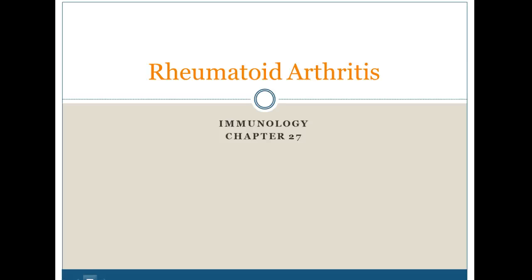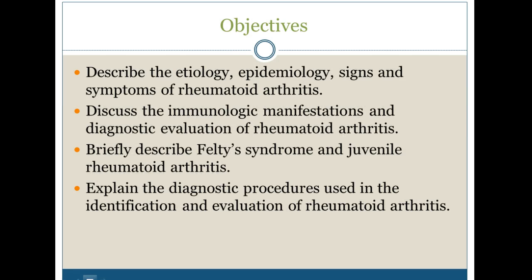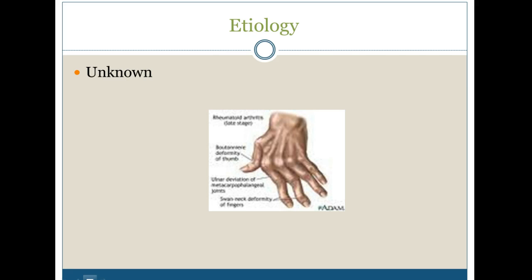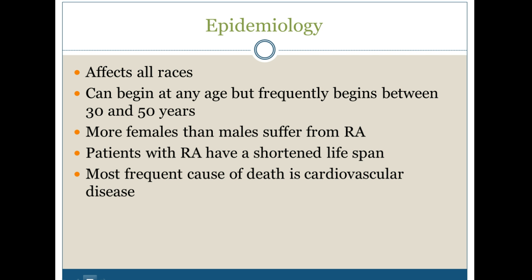Welcome to the section on rheumatoid arthritis. When we talk about the etiology of rheumatoid arthritis, it is unknown, or what we've been referring to in the last couple chapters as idiopathic — we have no idea. When I think of arthritis, I tend to think of my grandmother, my 90-year-old grandmother, who was knitting for many years before she passed and had a hard time using her knitting needles because of the severe disfiguration from her arthritis. In this case, we're going to talk about rheumatoid arthritis, or autoimmune arthritis.